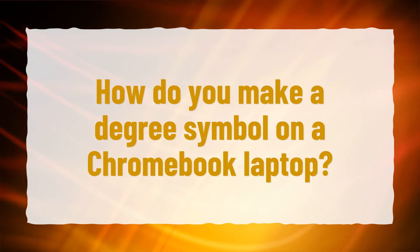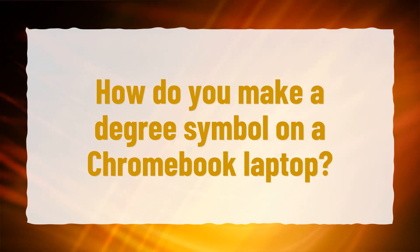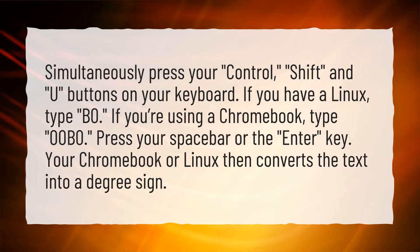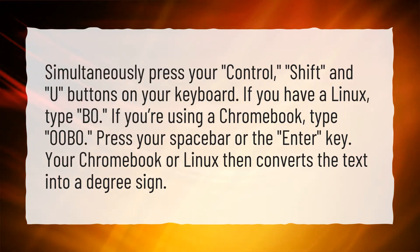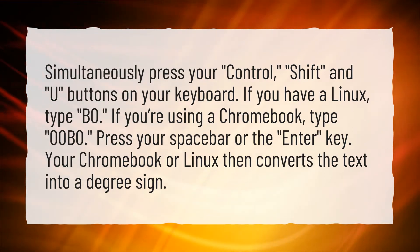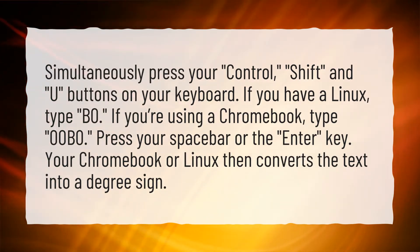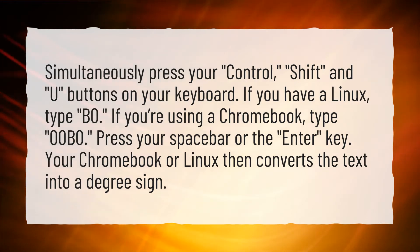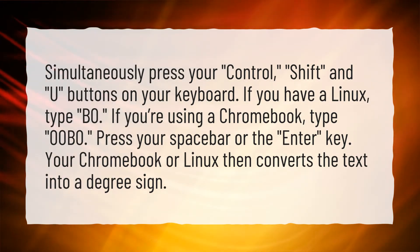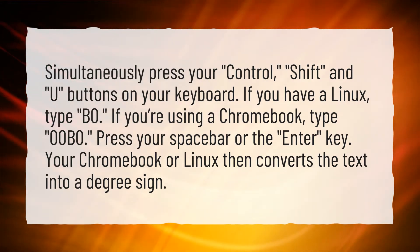How do you make a degree symbol on a Chromebook laptop? Simultaneously press your Ctrl, Shift, and U buttons on your keyboard. If you have Linux, type b0. If you're using a Chromebook, type 00b0. Press your spacebar or the Enter key. Your Chromebook or Linux then converts the text into a degree sign.